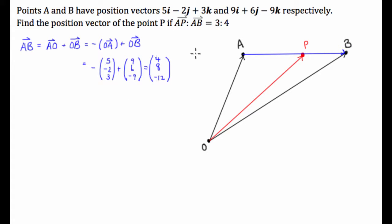Now what we also know is we know that we've been told that AP is 3 quarters of AB. So let's write that down.